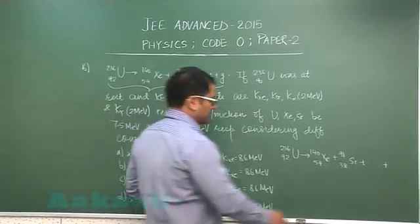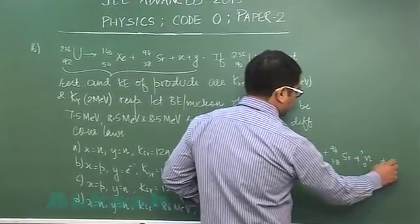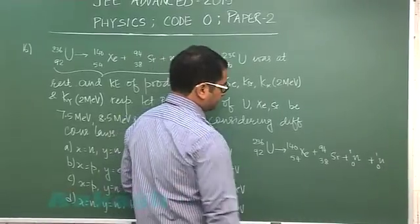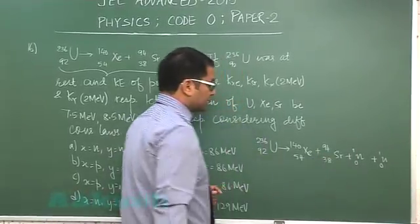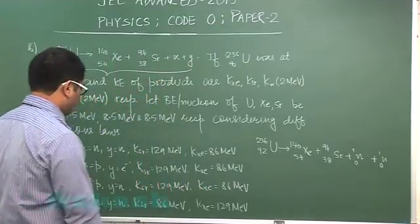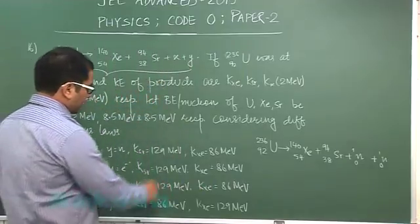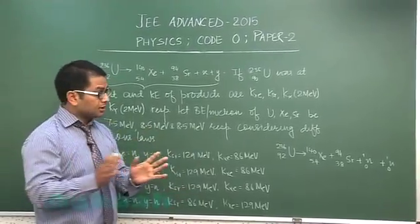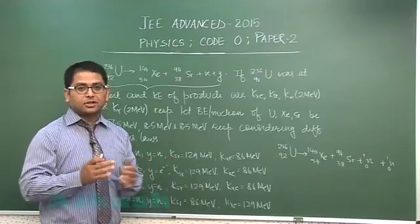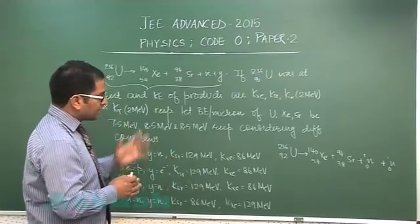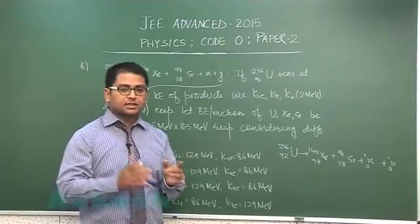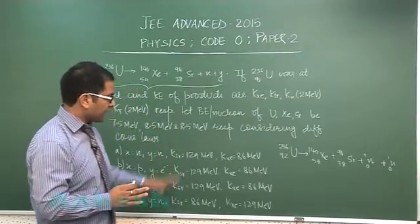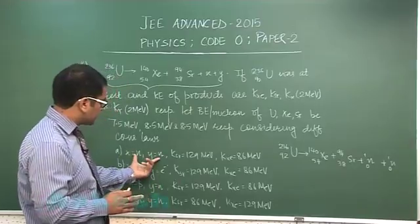If X and Y are both neutrons (1,0), you can see that it passes both charge number and mass number conservation. So the first option partially passes — charge conservation and mass number conservation are satisfied. Energy also has to be checked as another criterion, but at least the first test is passed.